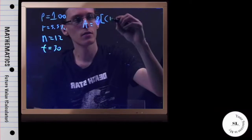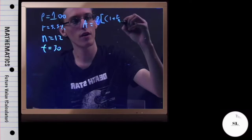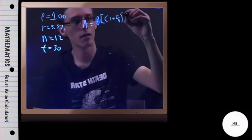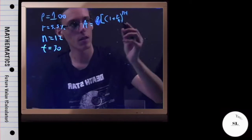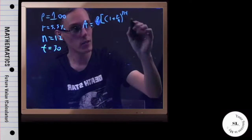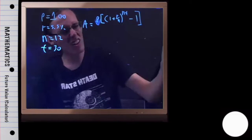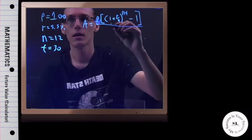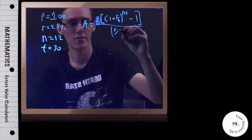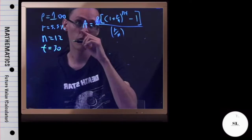1 plus the rate divided by the number of compounds, raised to the number of compounds times time, all this with the exponent minus 1, and then all of that divided by the rate divided by the number of compounds. So this is a bit of a beast of a formula.